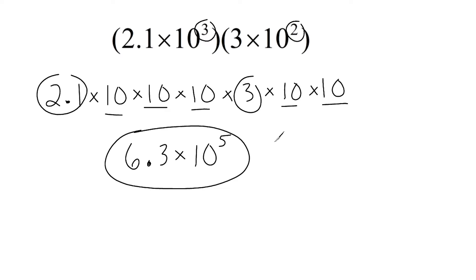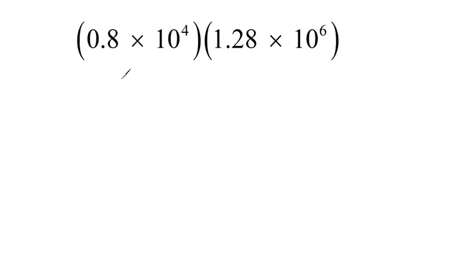All right, let's go ahead and show another example. All right, now what I'm going to do first is I'm going to take these coefficients here and I'm going to multiply those together. So we have to take 1.28 and multiply that by 0.8. And let's do some quick math here. That's 64, 16, 22, and that's 10. So we come up with 1.024.